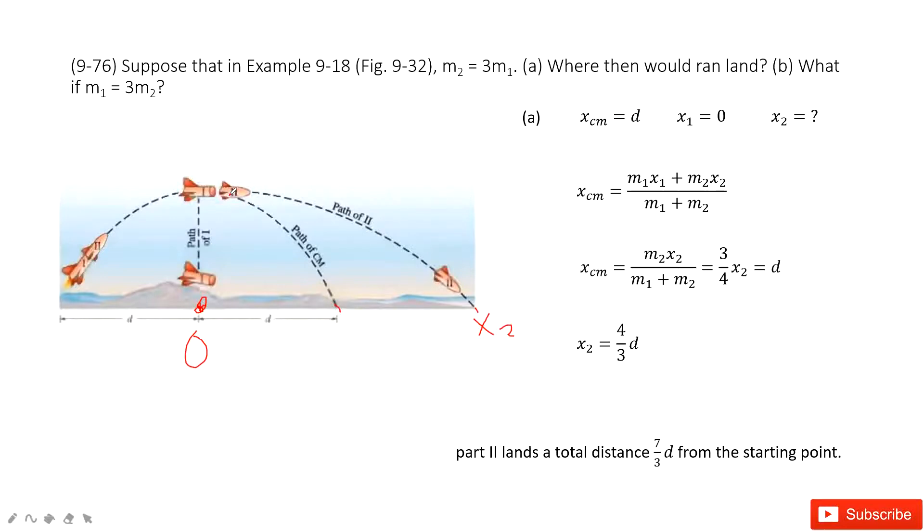When this rocket breaks, the center of mass will not change. Because no external force acting on it on x horizontal. So that means the center of mass is given d. And then the x1 is 0. We need to find x2. So we solve this equation. We can find x2 is 4 over 3 d.